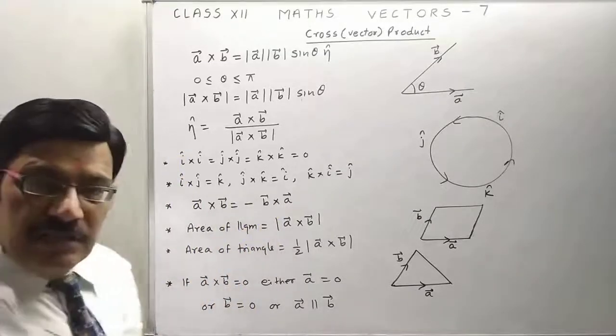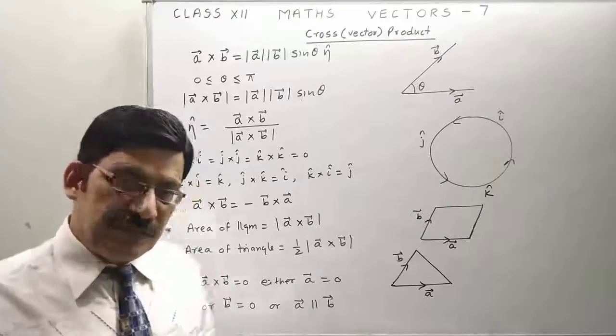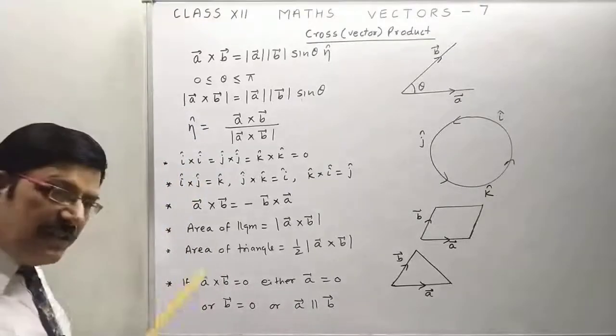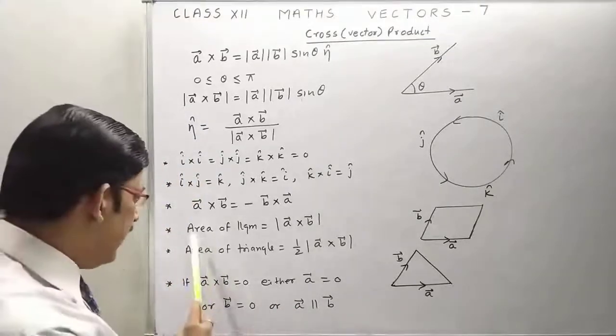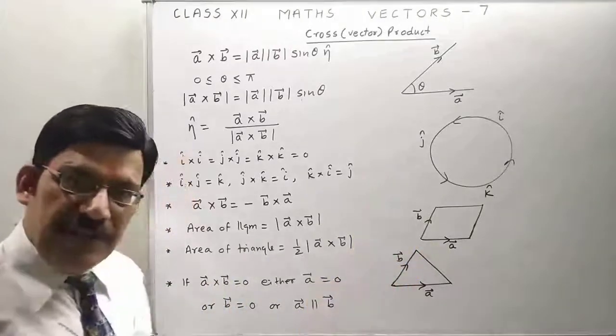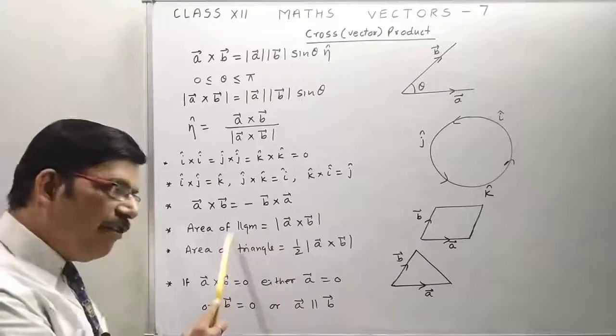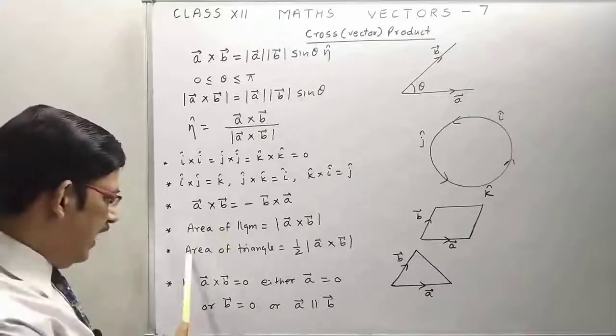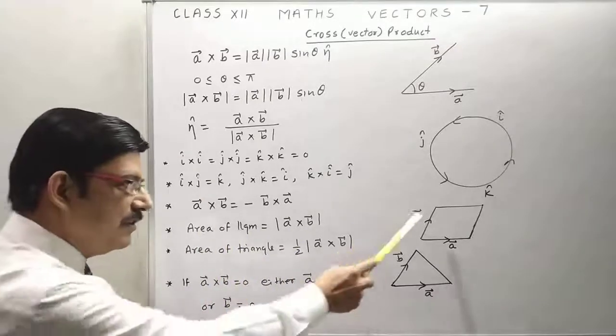Now, a cross B is equal to minus B cross a because the directions are opposite. What is the geometric meaning of cross product? That is the area of a parallelogram. If adjacent sides of a parallelogram are a and B, then this represents the area of the parallelogram.